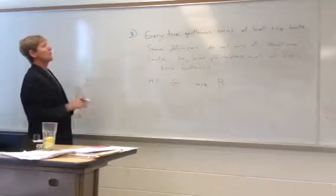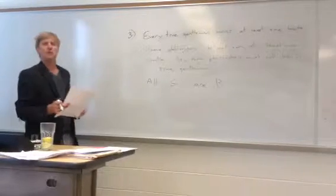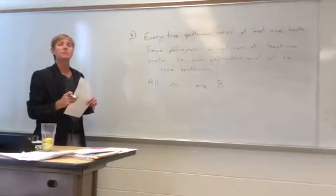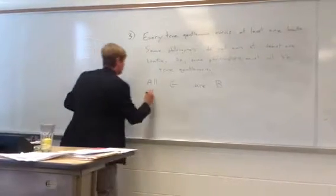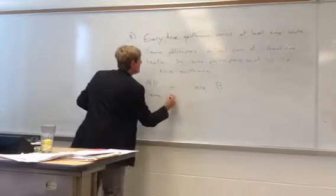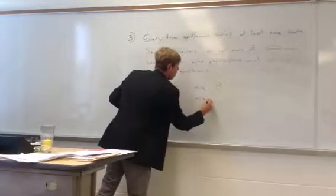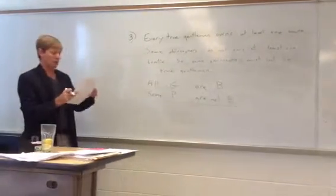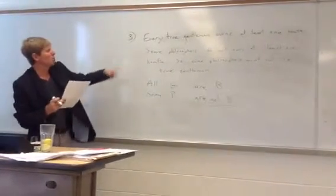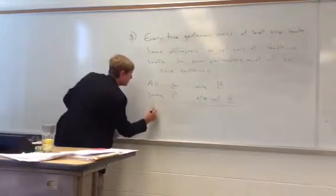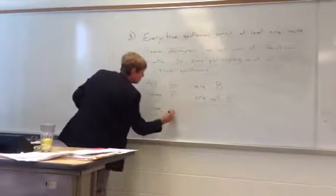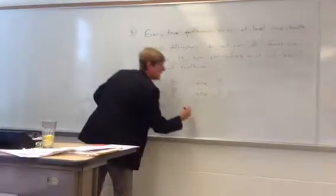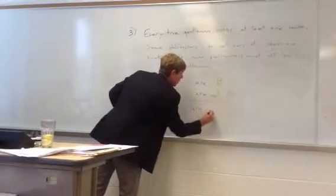Now, my second one is clearly an O statement. Some philosophers do not own at least one bow tie. That's an O statement. Some P are not B for individuals who own at least one bow tie. And finally, our conclusion is some philosophers, P, must not be true gentlemen, should be are not G.